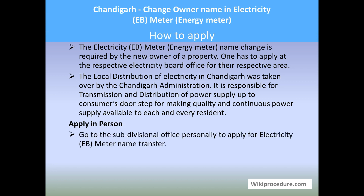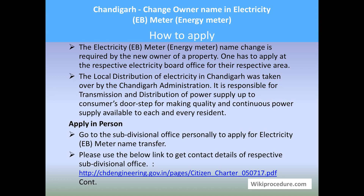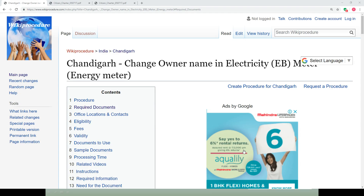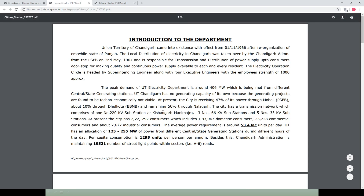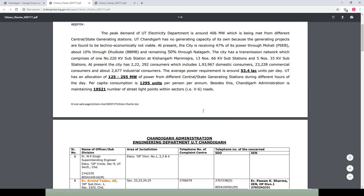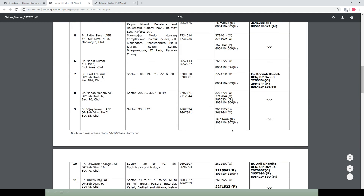Let us see how to apply. The electricity meter name change is required by the new owner of the property. To do this, you have to go personally to the respective local electricity board office. The local distribution of electricity in Chandigarh was taken over by the Chandigarh administration itself, which is responsible for the transmission and distribution of power supply to consumers. To apply, you have to go to the subdivisional office in person. In our wikiprocedure page, under the procedure section for applying in person, there is a contact link which will help you reach the contact page for the respective board.